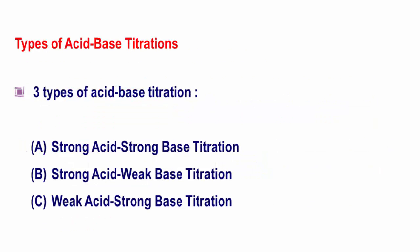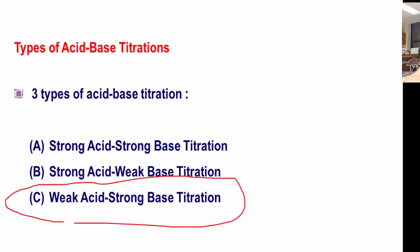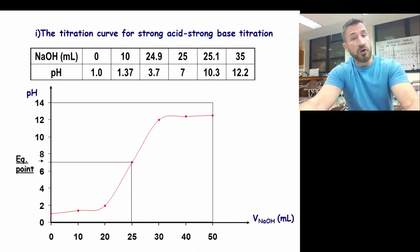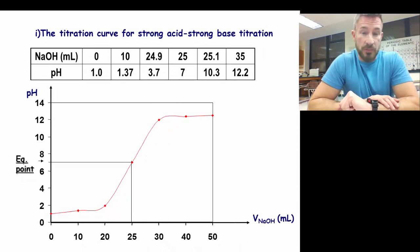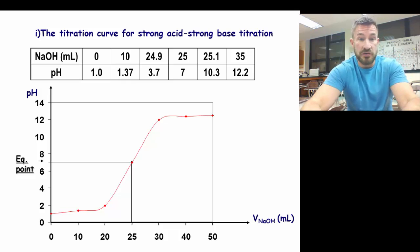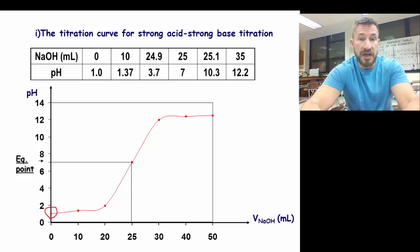There are three types of acid-base titrations. The type we're going to concentrate on today is the weak acid-strong base titration. First, let's look at the titration curve of a strong acid-strong base titration, which we've already done. It starts off at a low pH, and the equivalence point is exactly at 7. This is only for a strong acid and strong base titration.